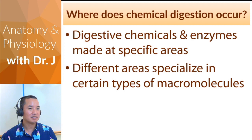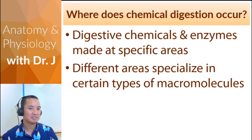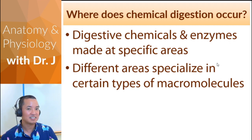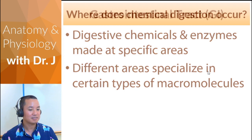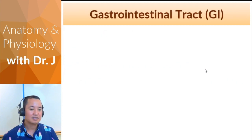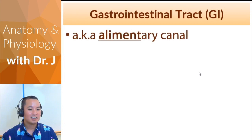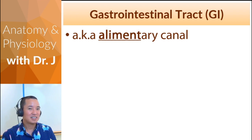You don't have the same enzyme all throughout your GI tract — different parts of the gastrointestinal tract have different chemicals, different pHs, and different enzymes, all specializing in breaking apart certain types of biological macromolecules. GI stands for gastrointestinal. Anatomists also call it the alimentary canal — same thing.